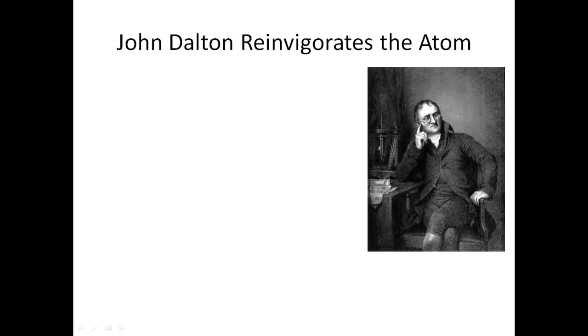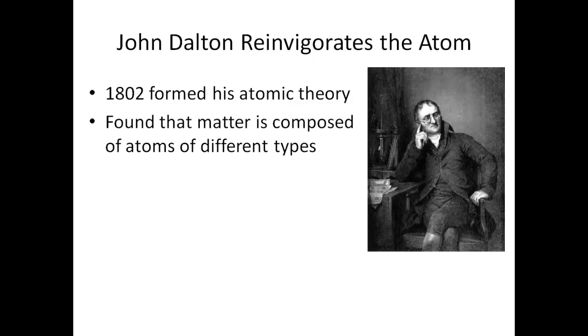John Dalton reintegrated the use of the word atom by forming his atomic theory in 1802. He lived in England from the mid-1700s to the mid-1800s, which is 200 years after Isaac Newton, another famous Englishman. Dalton experimented with pressures and weights of different gases. He found references to Democritus' work and used the word atom to explain his experimental results. He showed how matter is made of elemental atoms, and that atoms of each material have a distinct weight. Elemental meaning the element oxygen and the element hydrogen.